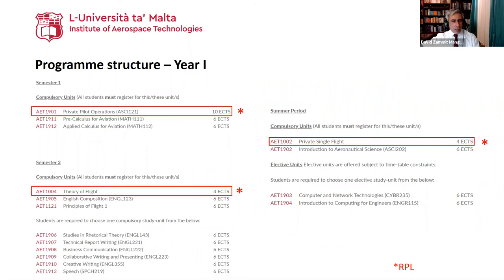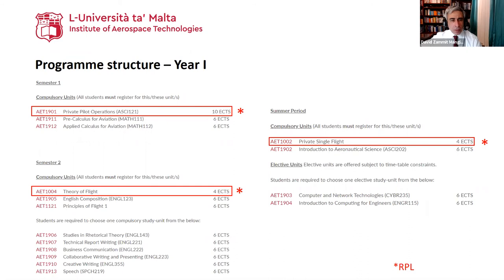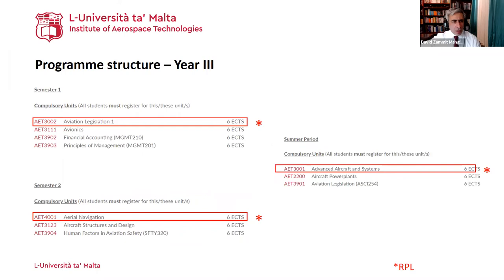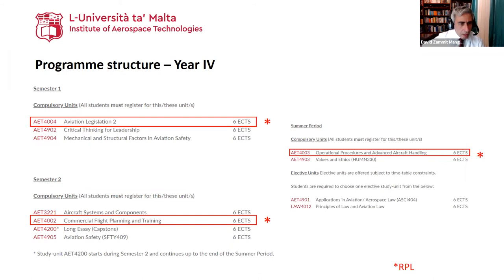In total, you would need to complete approximately seven modules in 12 months to progress to the next academic year. The same structure applies in Years 2 and 3. In Year 4, there is a capstone — called a long essay at the University of Malta — which is a small research project to bring your studies to a close. That is essentially one module in the final year. I'll hand over to Jason now.